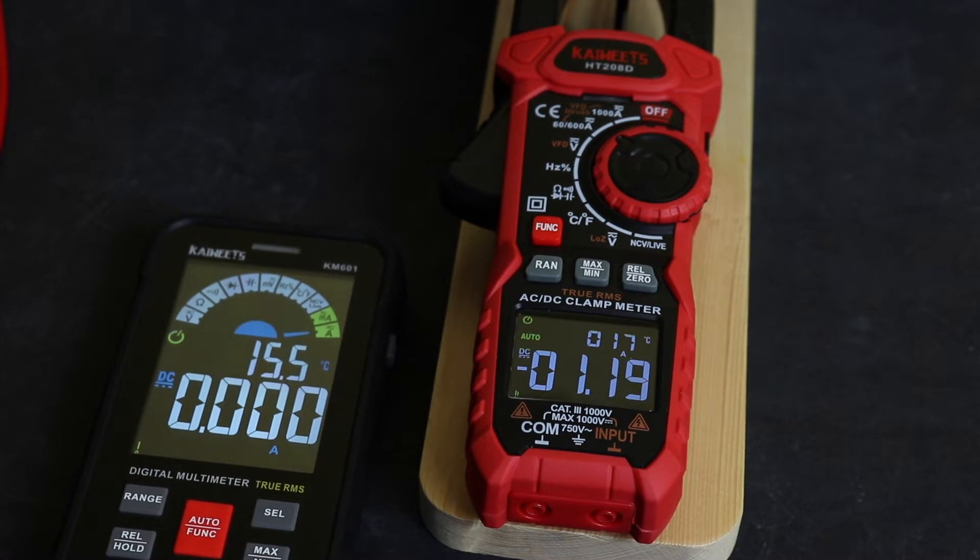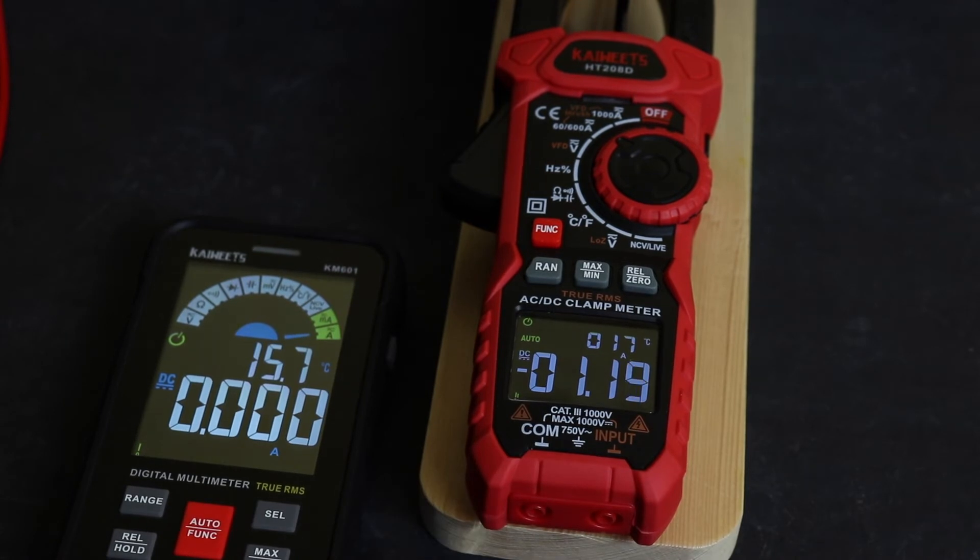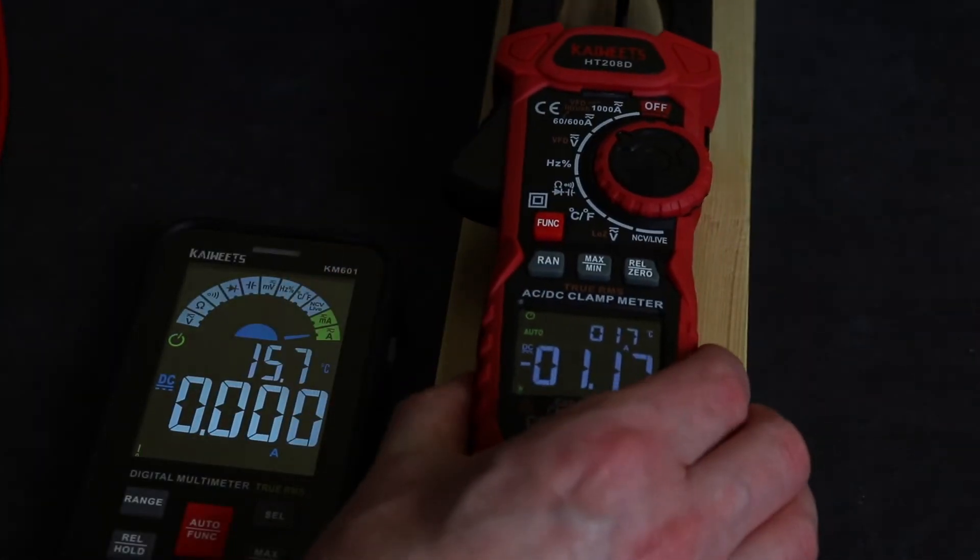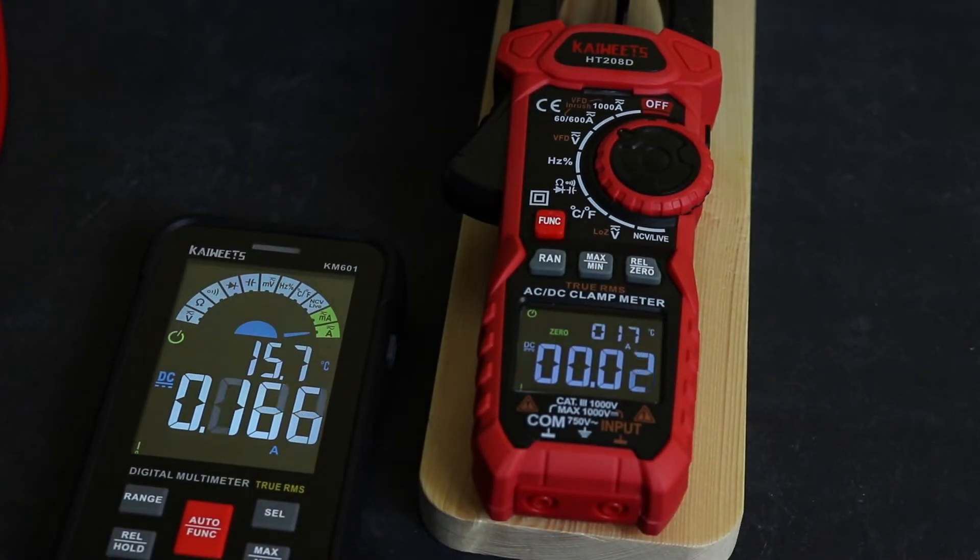We can switch to DC at the moment, so we'll just pump in the 0.5 amps. I didn't actually zero the DC did I, but you can see I've got 0.5 amps on the KM601. That's zeroed now, go again. You can see 0.493, 0.474, a little bit better than last time.